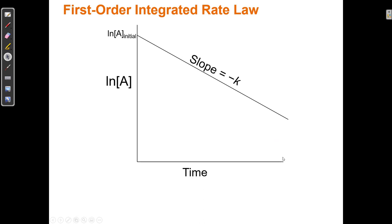When I integrate a zero-order, first-order, and second-order rate law, I get different equations because that exponent is either zero, one, or two. For a first-order rate law, the rate equals K times A to the one. The integrated rate law shows that the concentration at any time equals negative K times time plus the natural log of the initial concentration of A. This lets me use this equation to show how the concentration is changing over time.